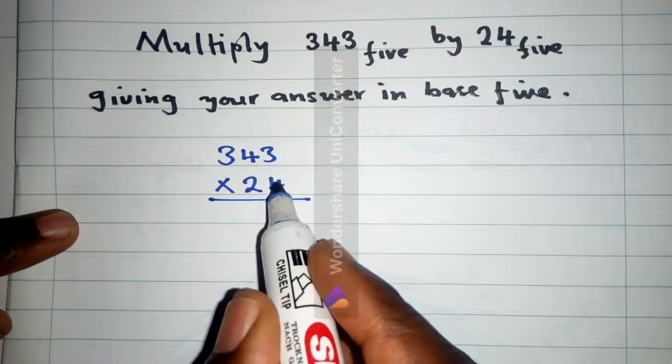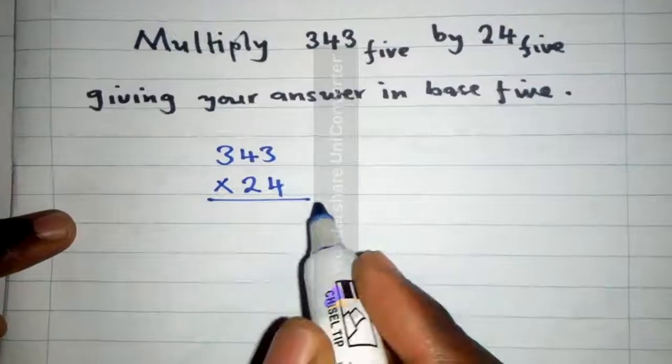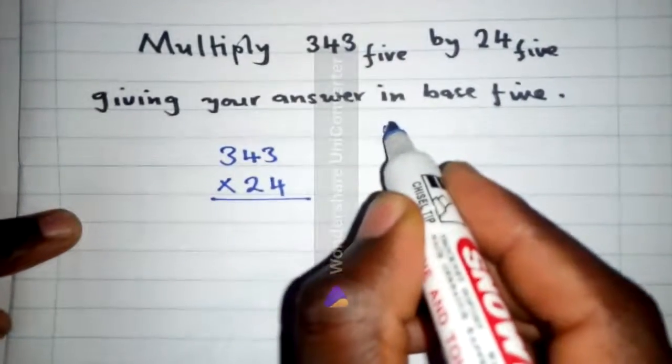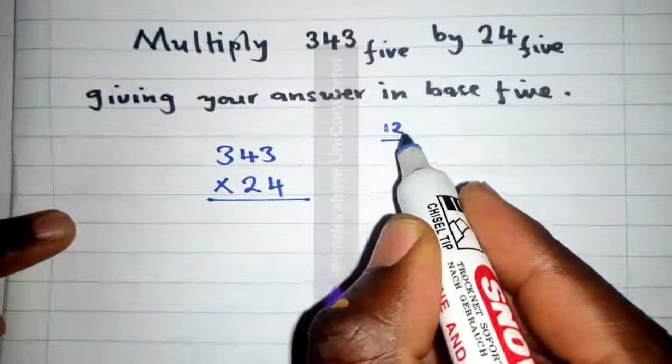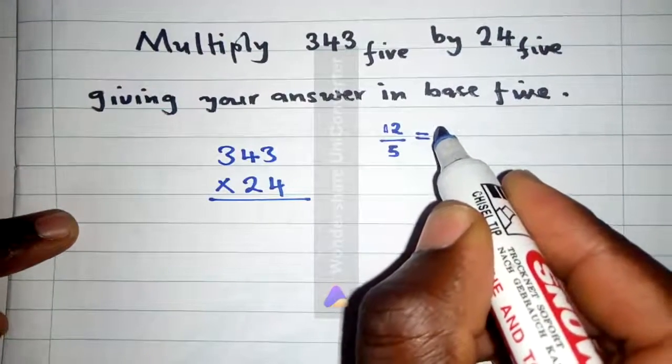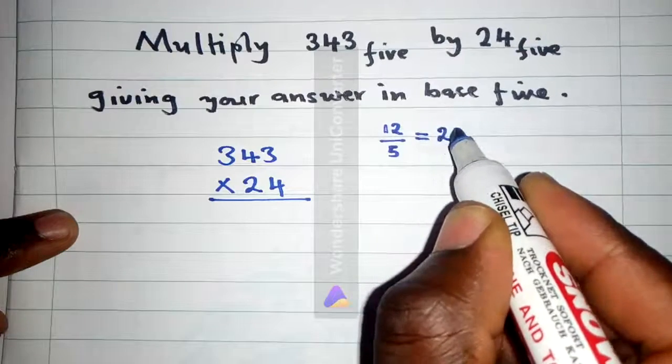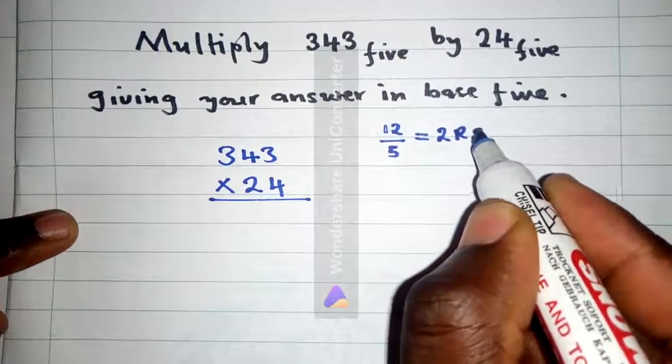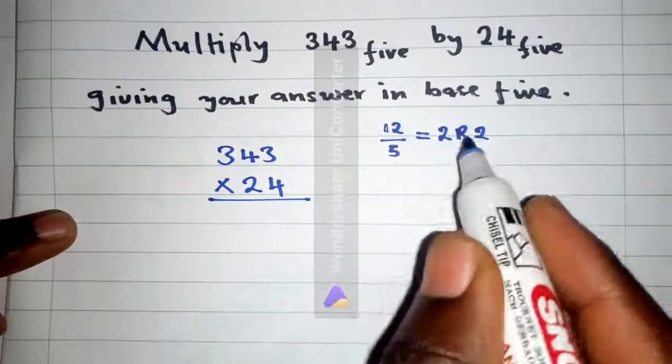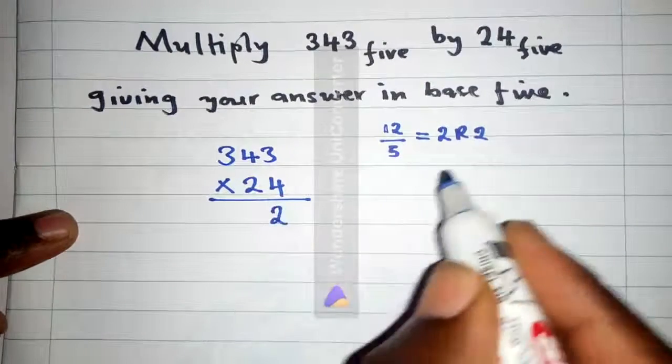We say 4 times 3 is 12. We're not going to write 12 here, we write it somewhere else. 12 divided by 5, because 12 is bigger than 4, will be 2 remainder 2. How many times can 5 go into 12? It's 2 remainder 2, so we write 2 here, and then the 2 in front will come and add it.